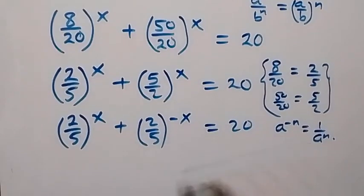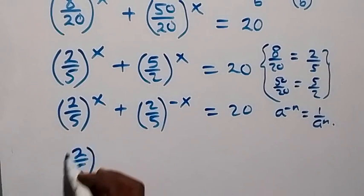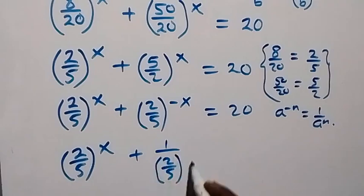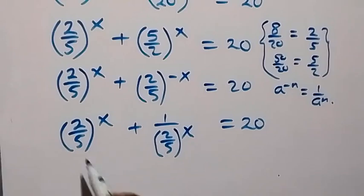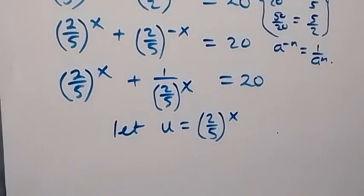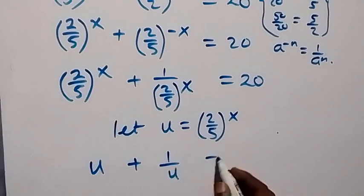Then now, applying this, we can write this as (2 over 5) raised to power x, plus 1 over (2 over 5) raised to power x, equals 20. From here, we use a letter to represent (2 over 5) raised to power x. Let u equal (2 over 5) raised to power x. Then this equation becomes u plus 1 over u equals 20.